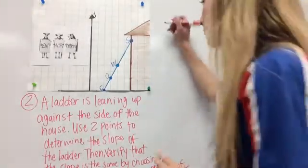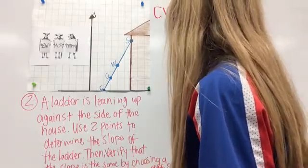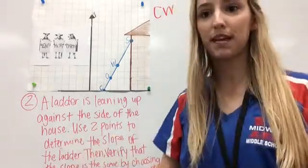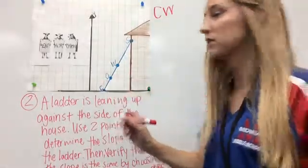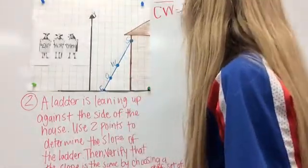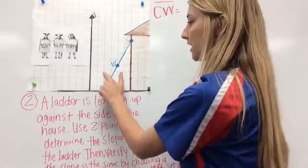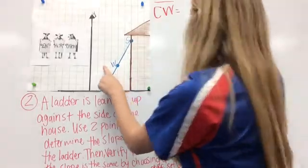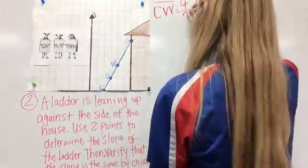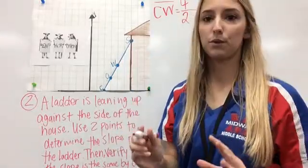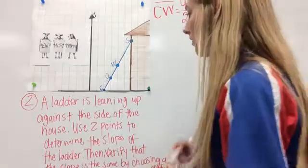So, let's do C to W. I'm just randomly picking points. We could have done C to O. That could have worked also. So, let's do line CW. The slope of line CW, the rise is 1, 2, 3, 4. And, the run is 1, 2. So, the rise over run is 4 over 2. Slope is 4 over 2.